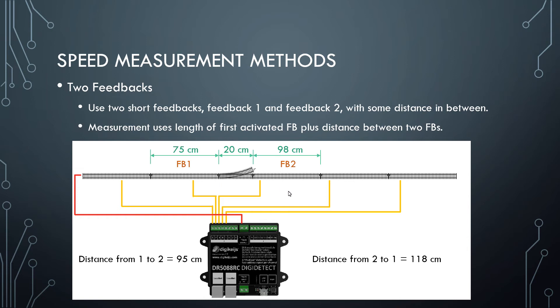And the distance from two to one would be the length of FB2, plus the length of the track between the two sections. So in this example here, we'd have 98 plus 20, which is 118 centimeters.